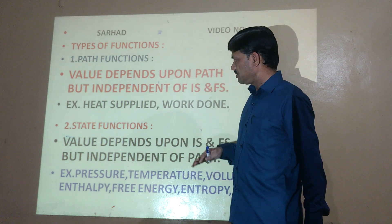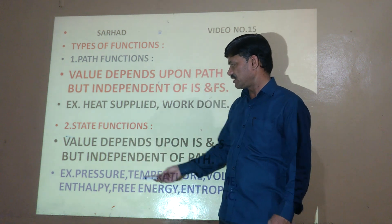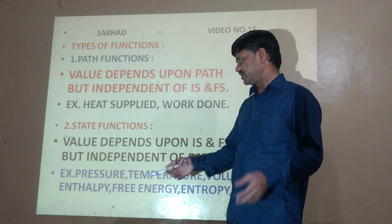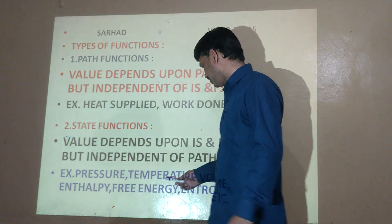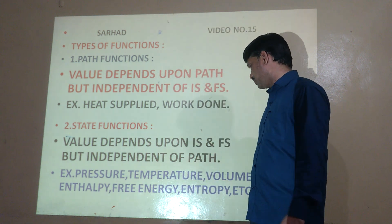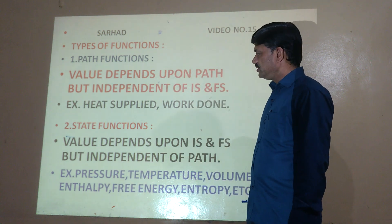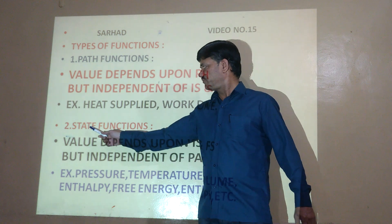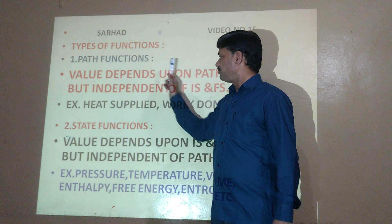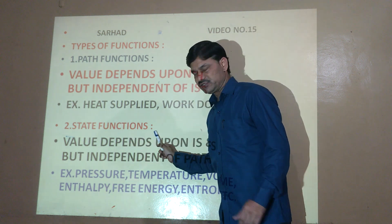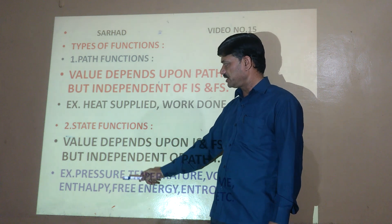A state function is one whose value depends upon the initial and final state, but not upon the path followed to reach from the initial state to the final state. Examples include pressure (ΔP = P₂ − P₁), temperature (ΔT = T₂ − T₁), volume, enthalpy, free energy, and entropy. In summary: for a path function, the path is important; for a state function, the initial and final states are important.